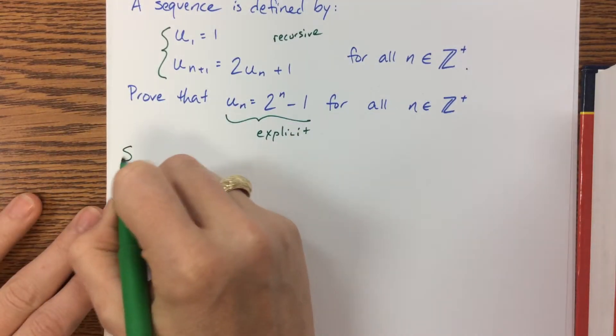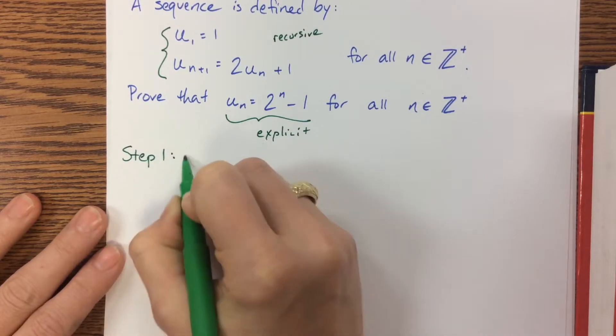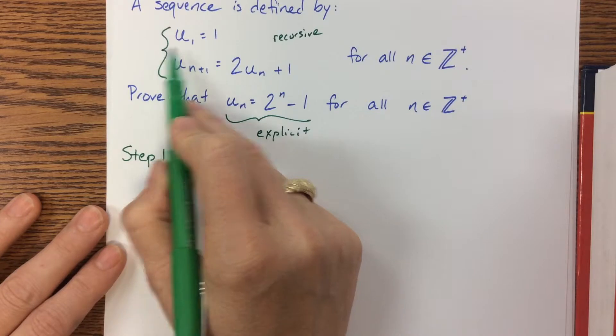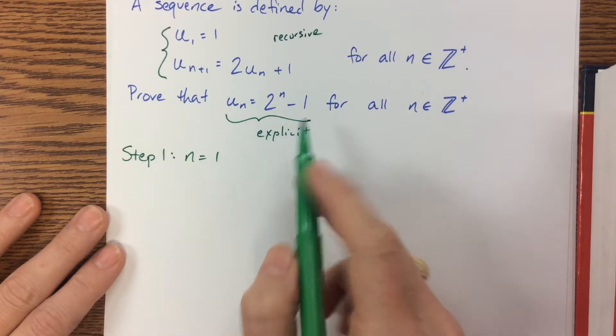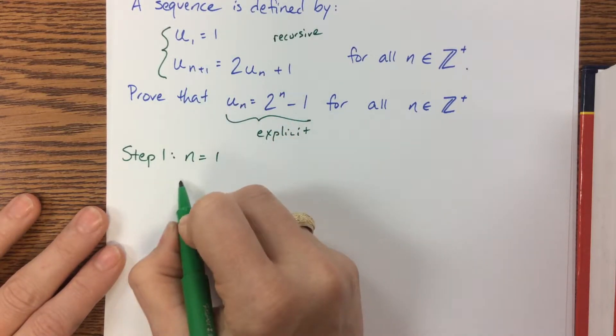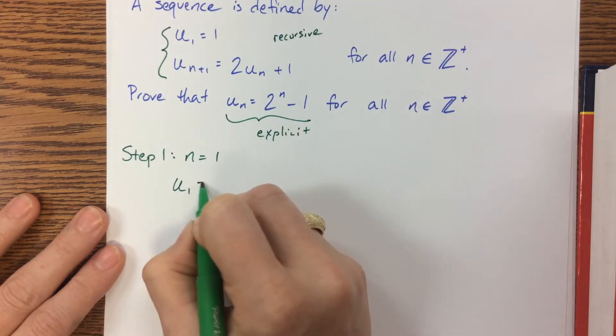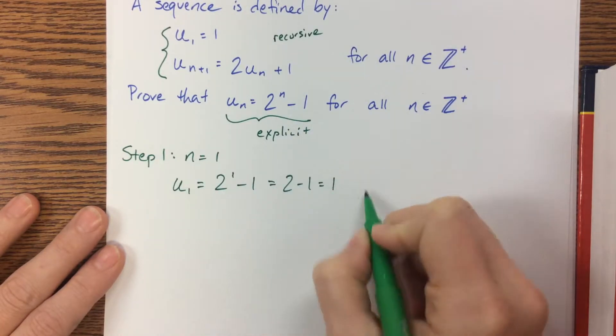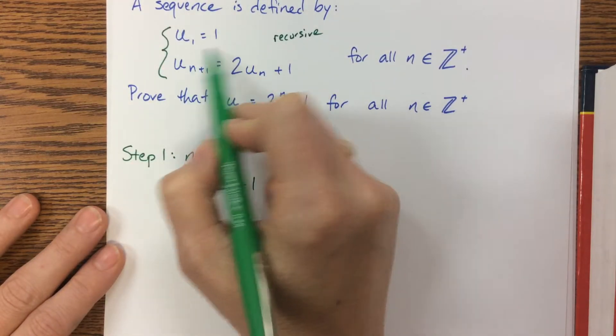As I get started, step 1 is always n = 1. My first term, they told me, was 1. So I'm going to use the explicit formula and verify that it really does give me that first term. I have u_1 = 2^1 - 1. That's 2 - 1, which equals 1. Therefore, that does match this value.